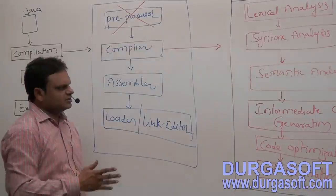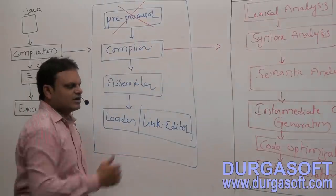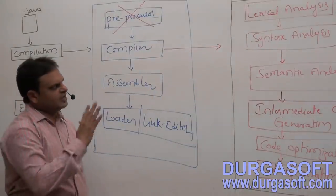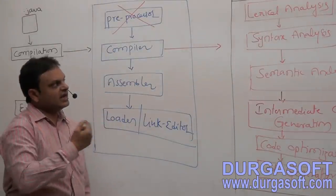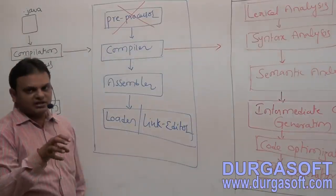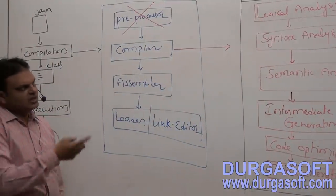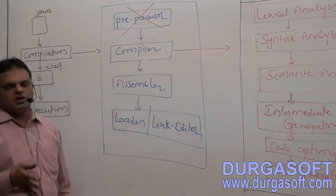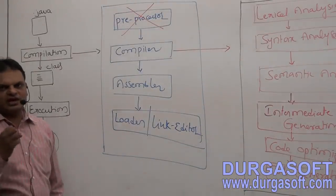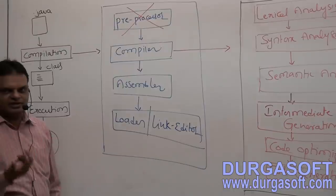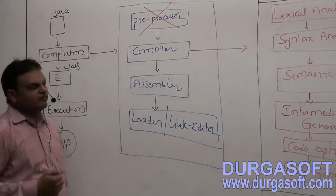After completion of buffering, the lexical analysis phase reads the complete program from the buffer and divides it into a number of pieces, where each piece is called a token. This process is called tokenization. The stream of tokens is the output from the lexical analysis phase, which is then given as input to the syntax analysis phase.